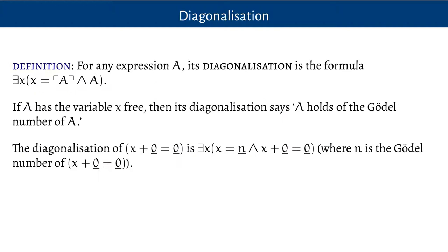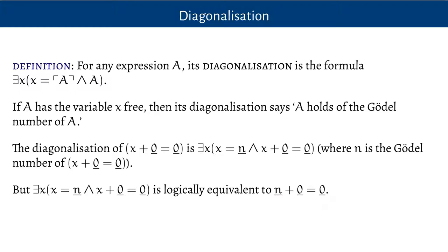Let's have a look at how it works in concrete practice, given a particular little formula. What I've got here is the formula x + 0 = 0, and its diagonalization is: there is an x such that x equals n, and x + 0 = 0, where n is whatever the Gödel number is of x + 0 = 0. So it's just a longer formula, and you can see that it's going to be logically equivalent to saying that n + 0 = 0.